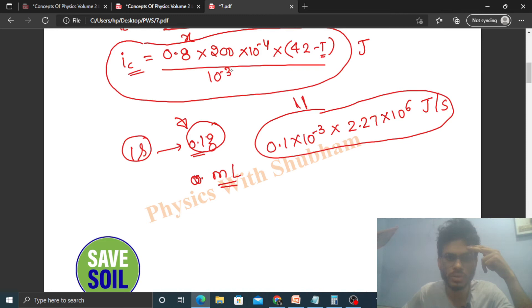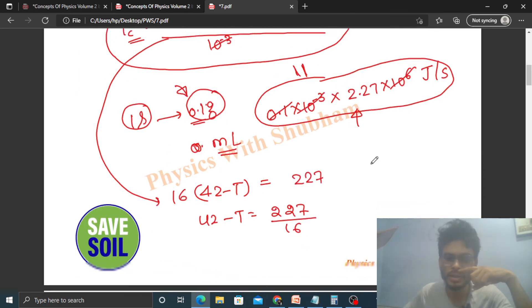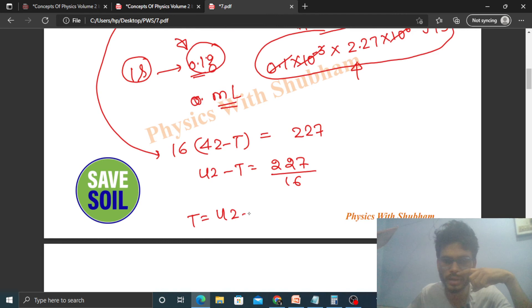The value of T: 42 minus T equals 227 divided by 16, so T equals 42 minus 227 divided by 16. This will be in degree Celsius. Calculate this - that's your answer.